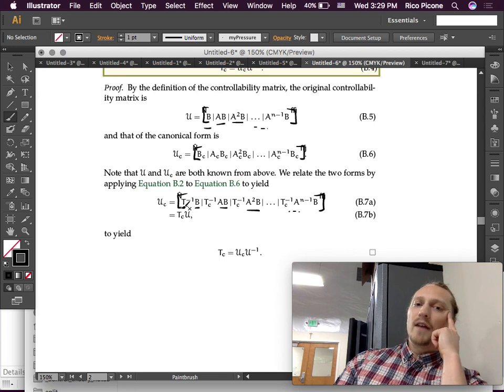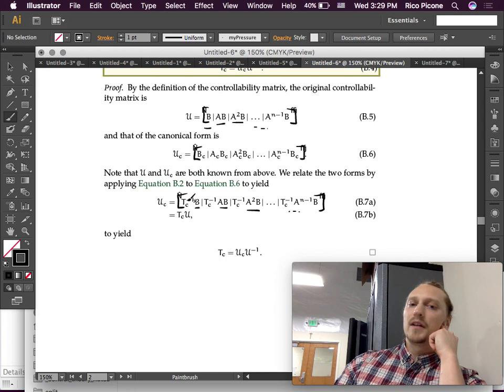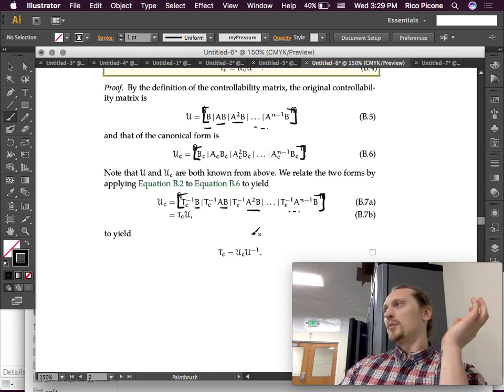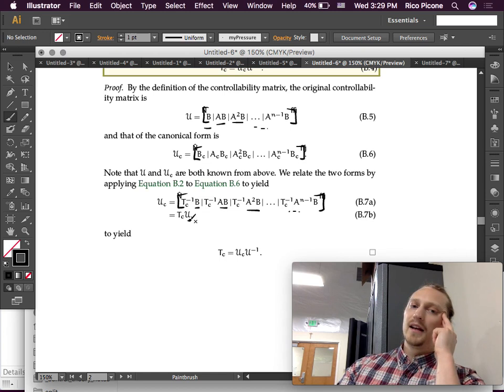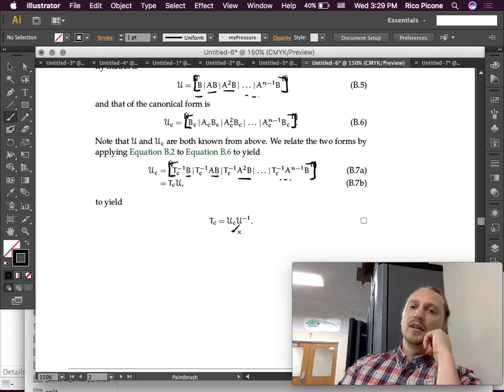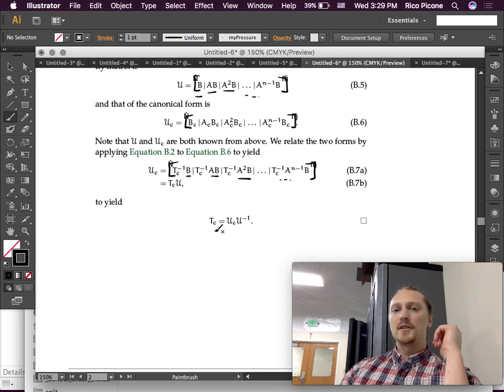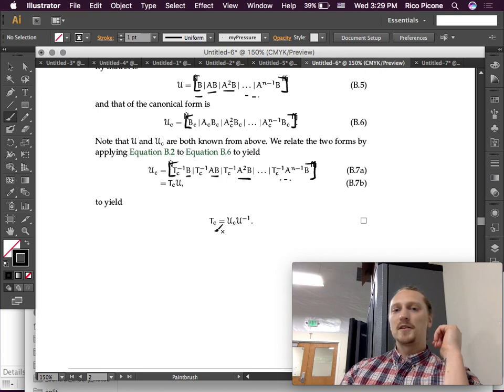So, if we left multiply by TC, we get the original U. So, therefore, this is equivalent to just being TC times U. And then it's a simple inverse to solve for TC. So, there's the proof. Just solving for it directly.